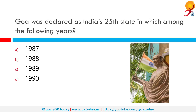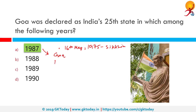Goa was declared as India's 25th state in which year? First, on 16th May 1975, Sikkim became a part of India as its 22nd state, with its monarchy abolished. Goa became a state much later, in 1987. Arunachal Pradesh and Mizoram also became states in February of that year, while Goa became a state on 30th May.